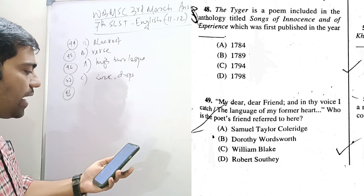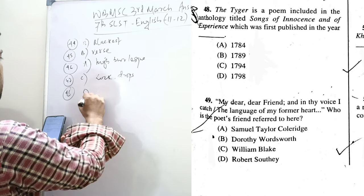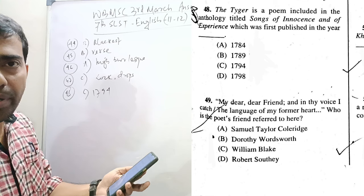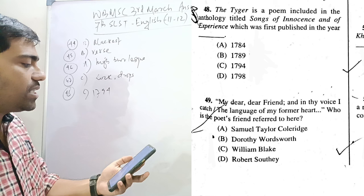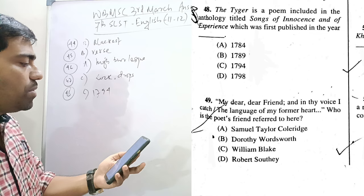Question 48. The Tyger is a poem included in the anthology titled Songs of Innocence and Songs of Experience, which was first published in the year 1794. You must keep in mind that Songs of Innocence was first published in 1789. And Songs of Experience, the companion or antithetical anthology of Blake's poem was published in 1794.